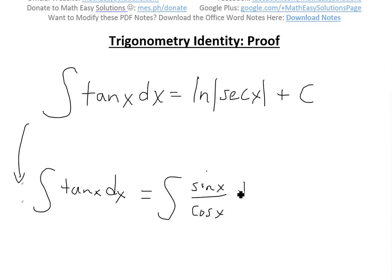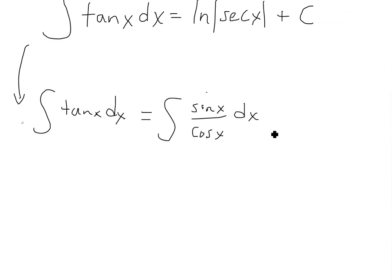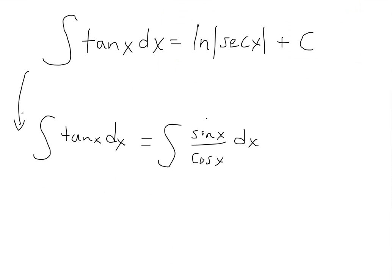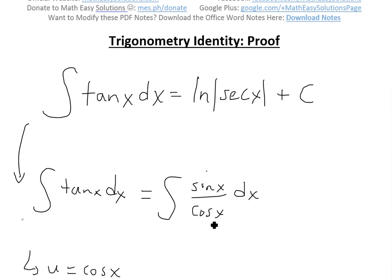You can see more on this in the video link below in the description about trigonometry. So now we could use substitution and simplify this by letting u equal cos of x, just because it's divided by cos x here, we want to simplify it by putting a u there.